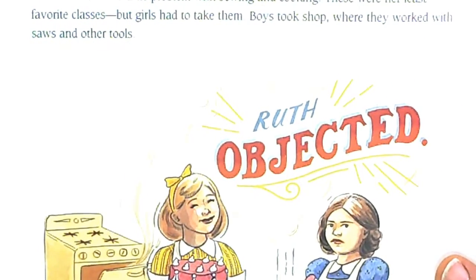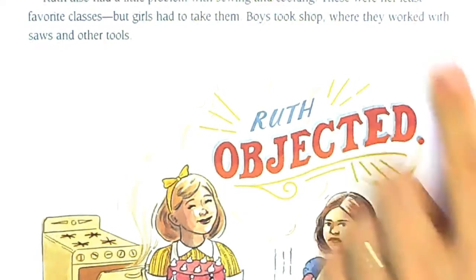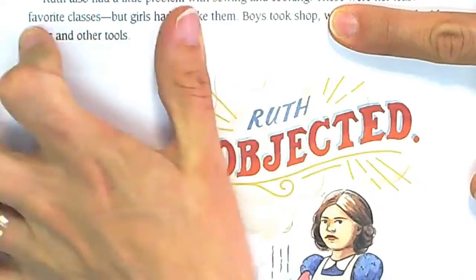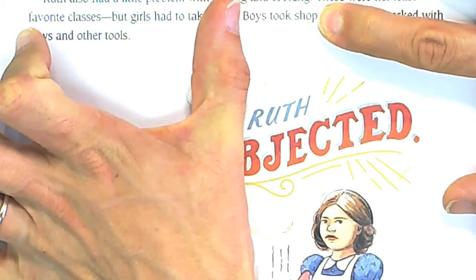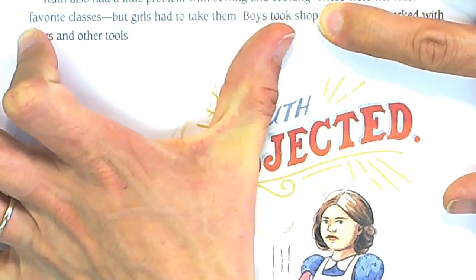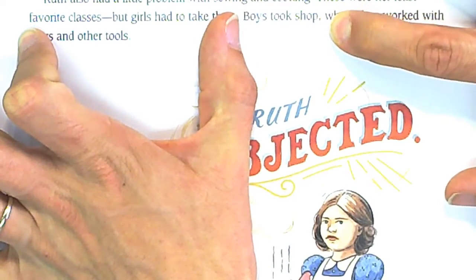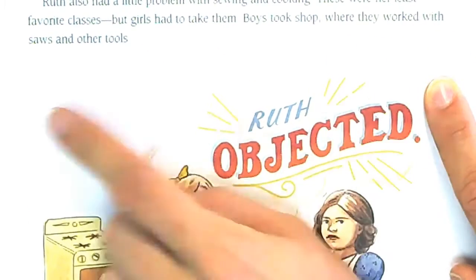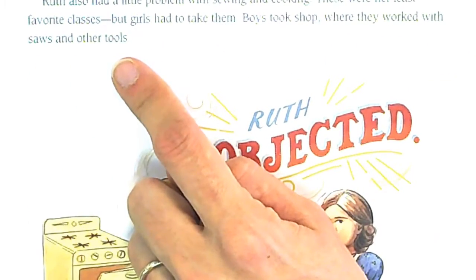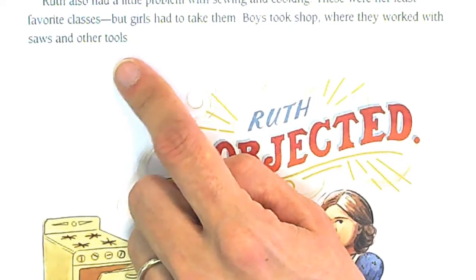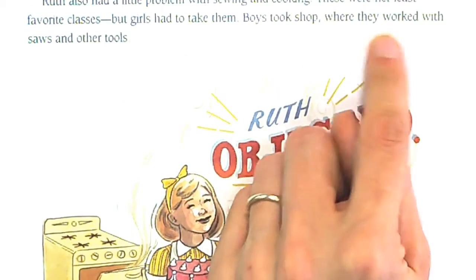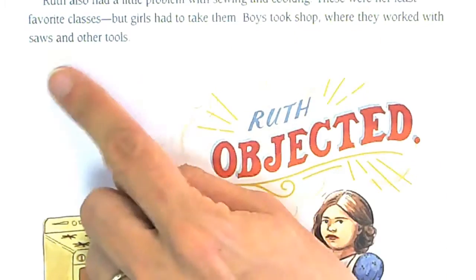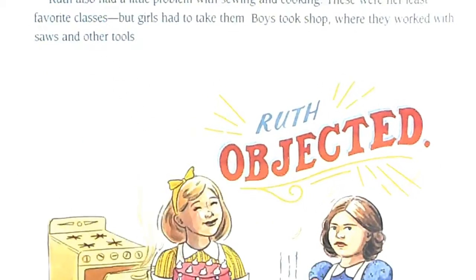An appositive is a little addition to the sentence that helps paint a clearer picture. 'Boys took shop' — that could be a sentence on its own. It's a full complete sentence with a noun, a verb, and an object. But this extension, 'where they worked with saws and other tools,' is an appositive. It's just a little bit of extra information that helps clarify the sentence — it tells the reader what 'shop' means.